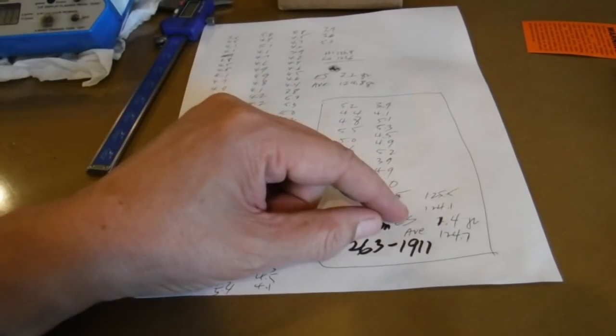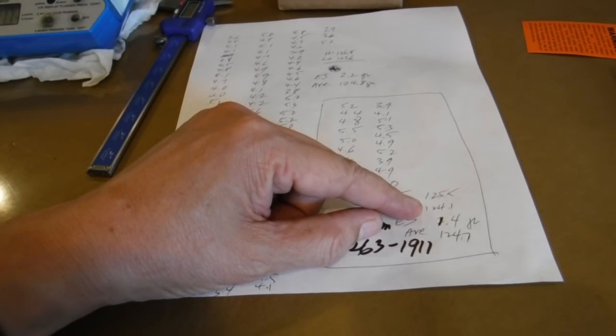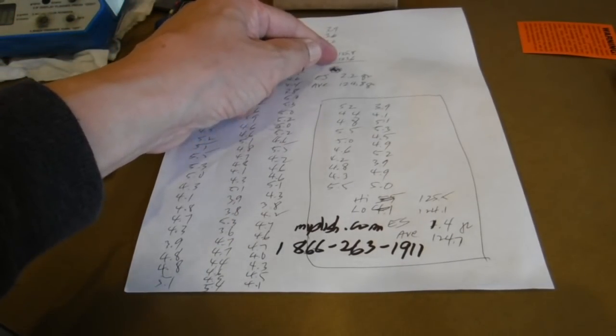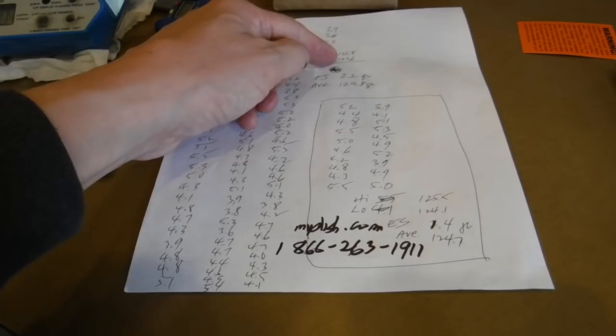Now, the low out of the 20 was 124.1, but out of the 100, the low was 123.6, a full half grain lower.